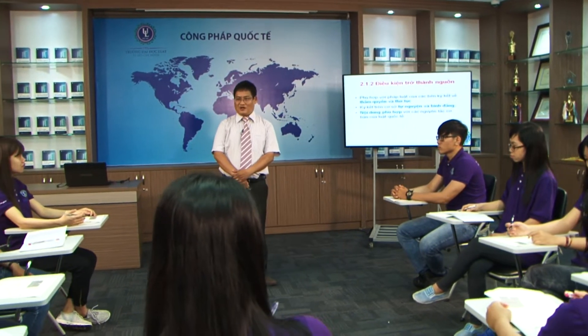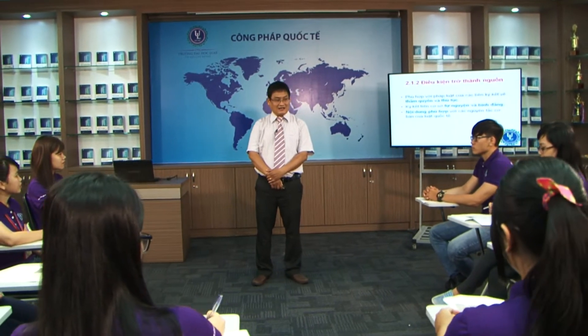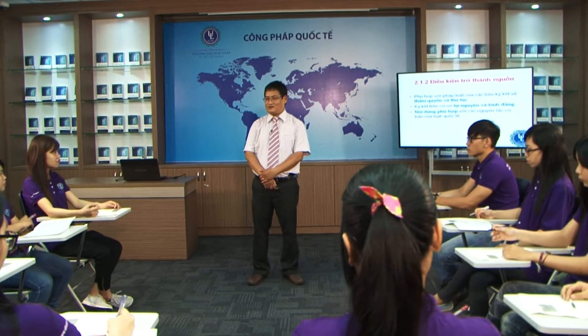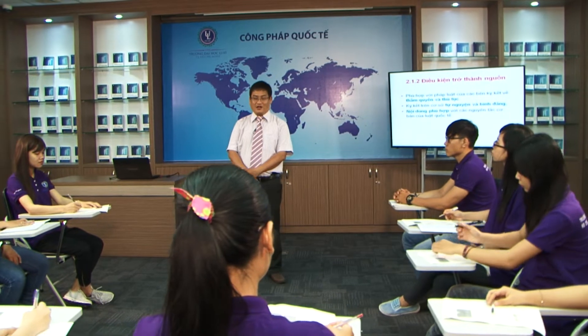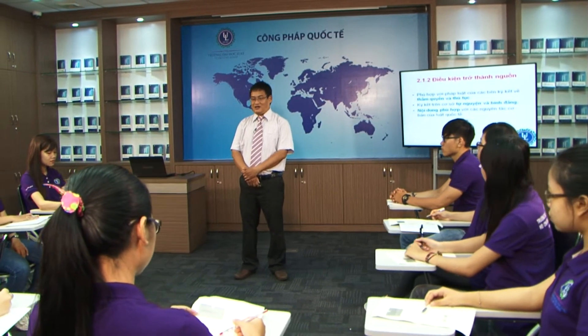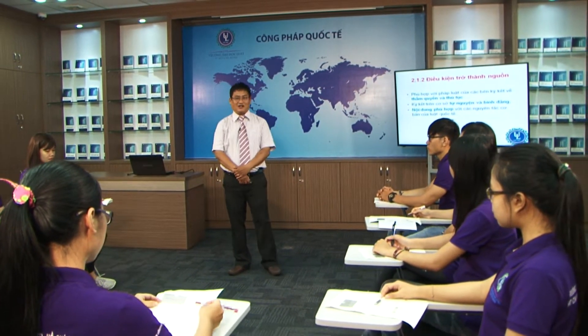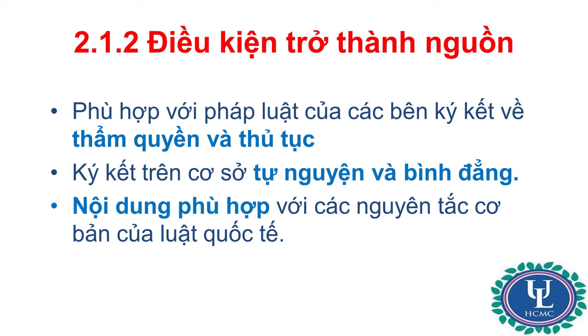Xin nhắc lại rằng không phải bất kỳ thỏa thuận nào được ký kết giữa các chủ thể luật quốc tế với nhau đều được coi là điều ước quốc tế. Để được coi là điều ước quốc tế, thỏa thuận này phải đáp ứng 3 điều kiện: thứ nhất, không trái với quy định của pháp luật các bên về thẩm quyền và thủ tục; thứ hai, phải được ký kết trên cơ sở tự nguyện và bình đẳng; thứ ba, nội dung không được trái với những nguyên tắc cơ bản của luật quốc tế.